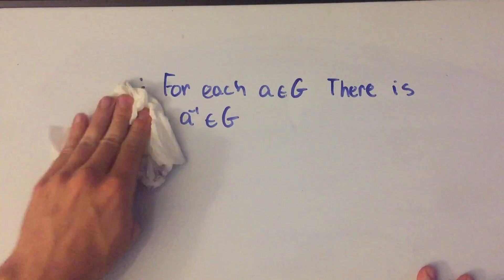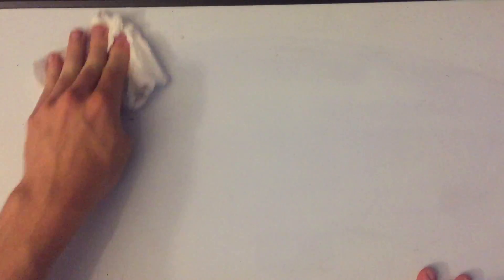So I'm gonna prove this for you, and I'm gonna do it a fairly common way, which if I want to show this thing is unique, I'm gonna suppose that there are two of those things, and then show that those things are the same.